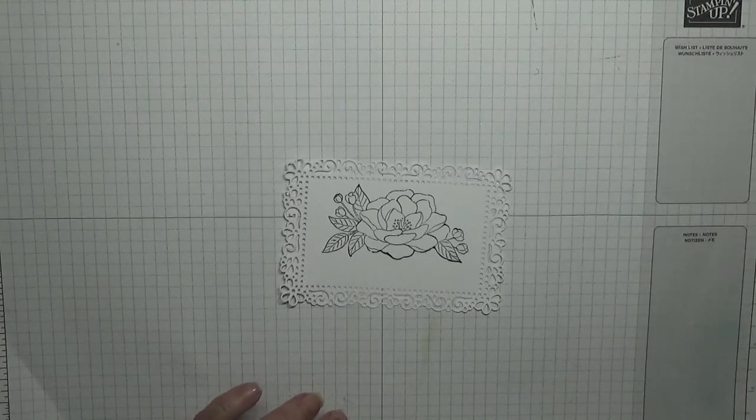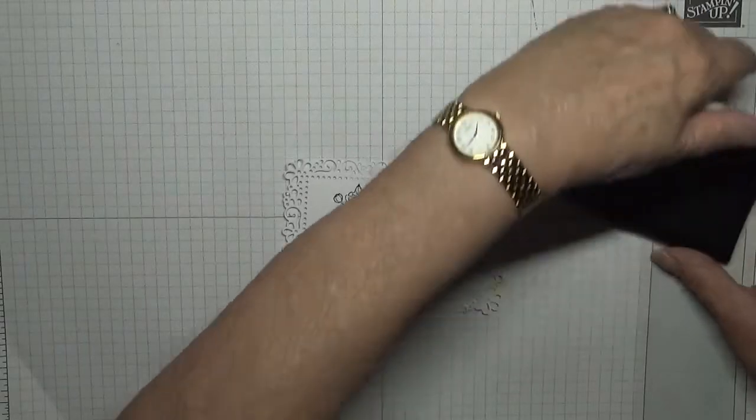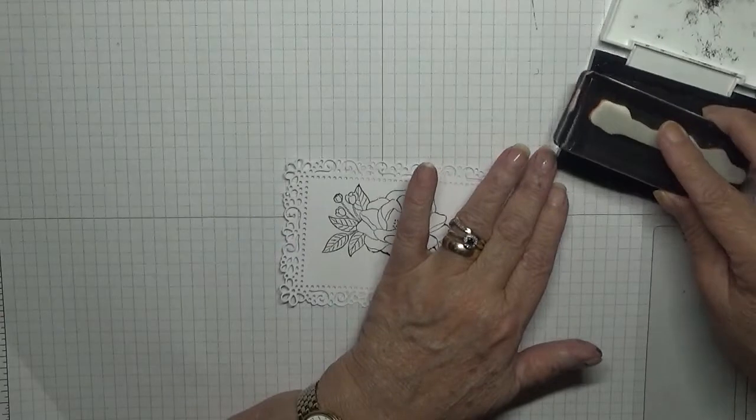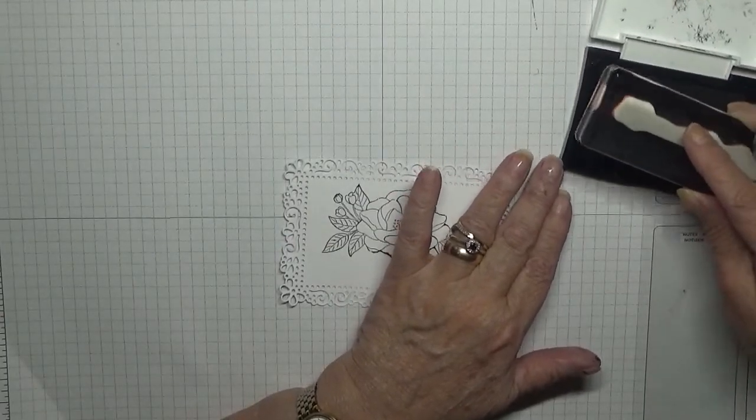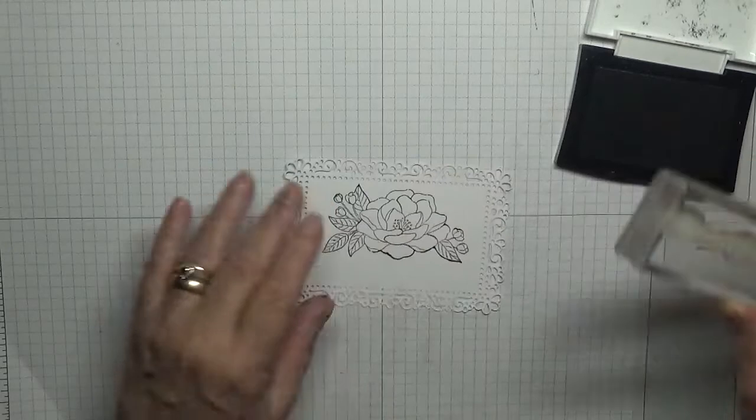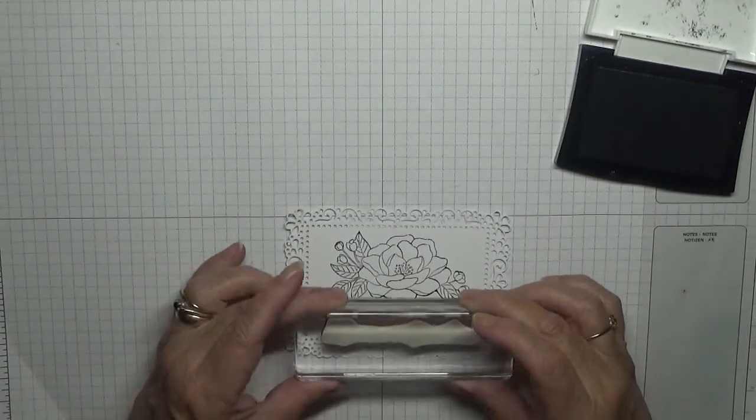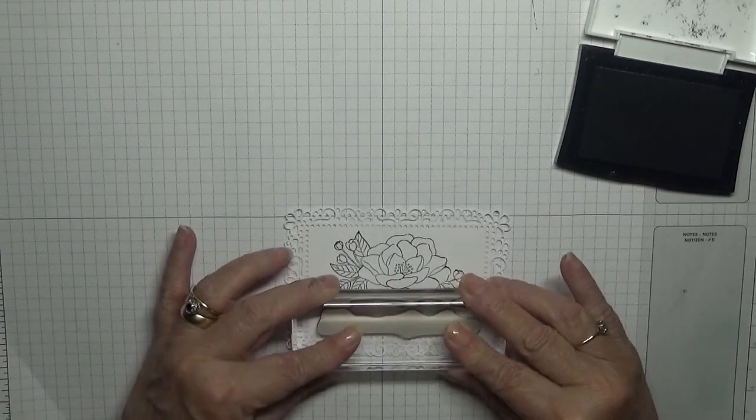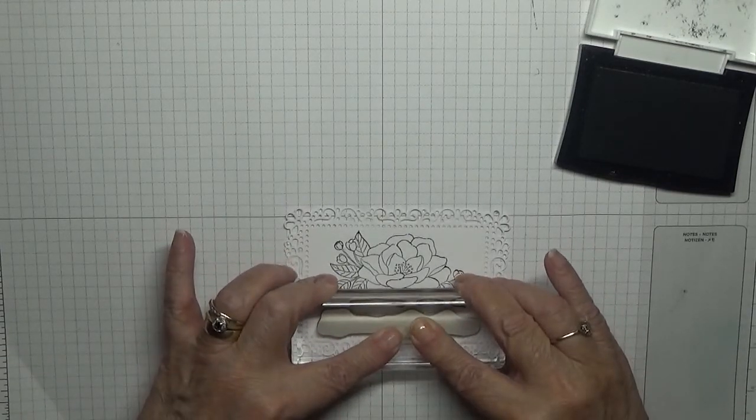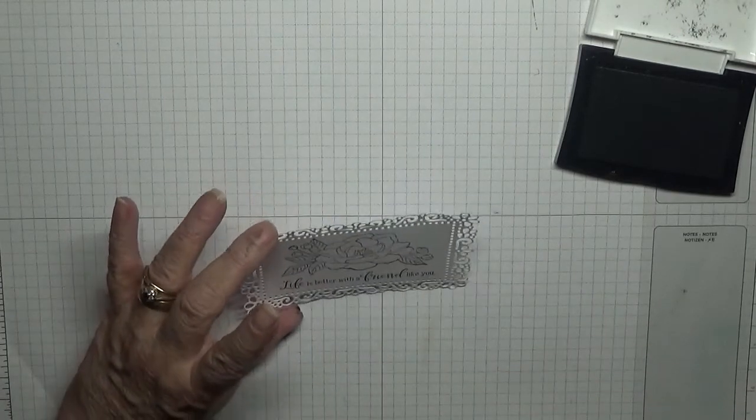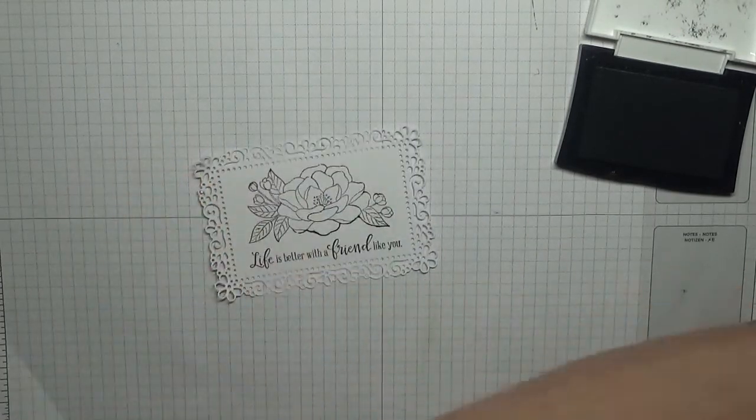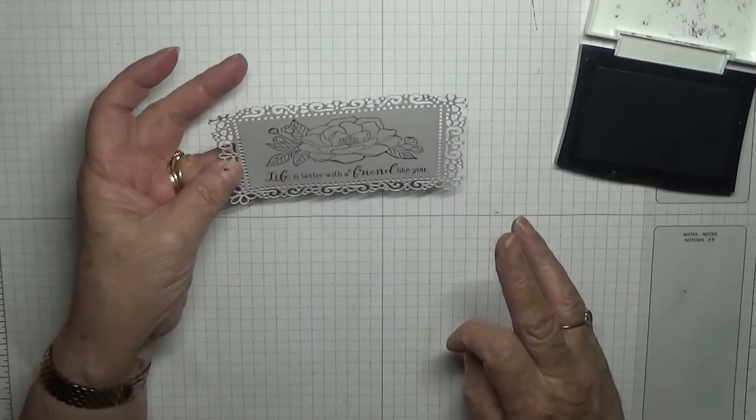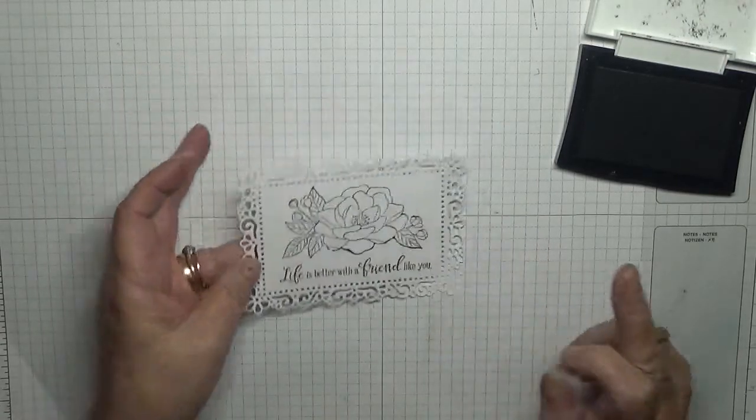Get rid of that, bring in our VersaMark and our sentiment: life is better with a friend like you. We're going to place it just down there and pray that it's straight. It's a little tiny bit up that end than it is that end, but that's alright.